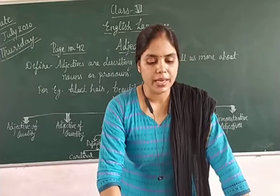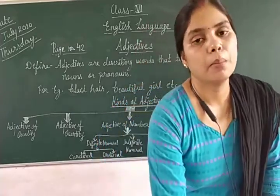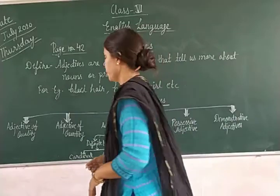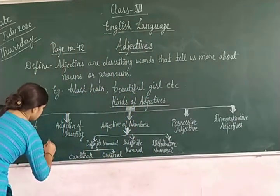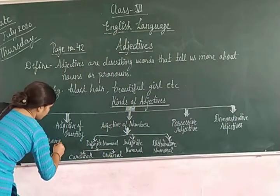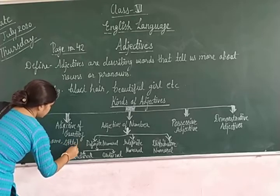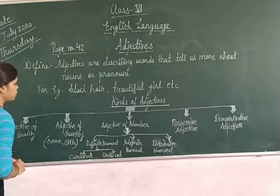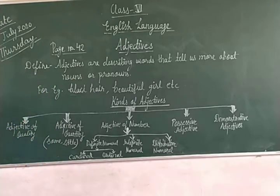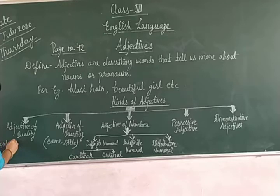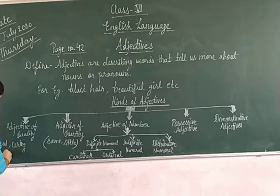There are some examples like some, little, much, enough. These are the examples of adjective of quantity. And examples of adjective of quality are like good, caring, bad — these tell the quality of a noun or pronoun.